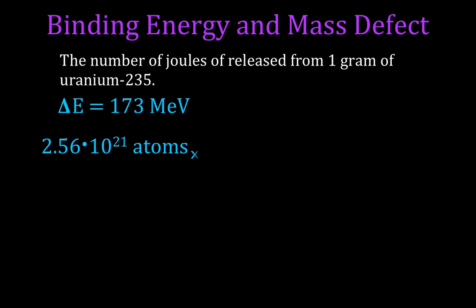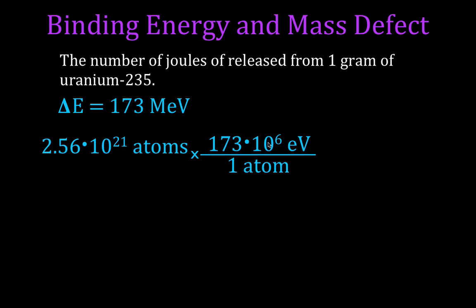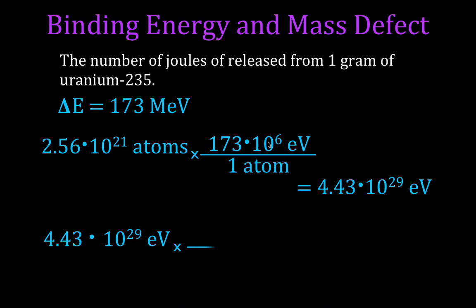We multiply the number of nuclei by 173×10⁶ electron volts per nucleus (that's the mega electron volts value). This gives us 4.43×10²⁹ electron volts total.